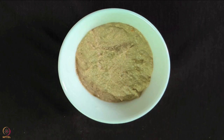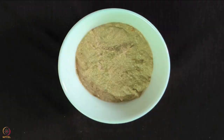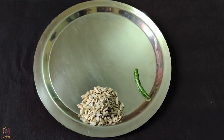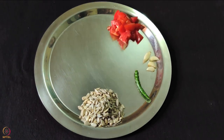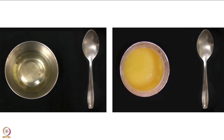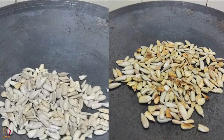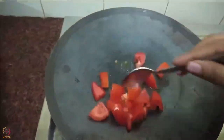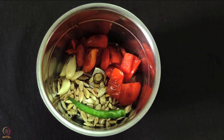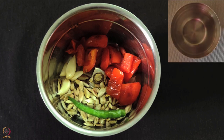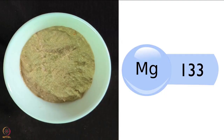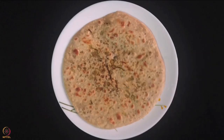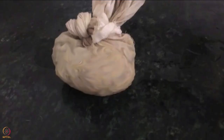Our next recipe is sunflower seeds chutney. For this recipe you need 2 tablespoons of sunflower seeds, 1 green chili, 4 to 5 cloves of garlic, 1 small chopped tomato, salt to taste, and half teaspoon oil or ghee. Roast sunflower seeds till light brown on medium heat, then allow to cool. Heat oil or ghee in a pan and sauté the chopped tomato; keep aside to cool. Grind both into a paste along with garlic, chili, salt, and water. Sunflower seeds chutney is ready — 2 tablespoons contains around 133 milligrams of magnesium.